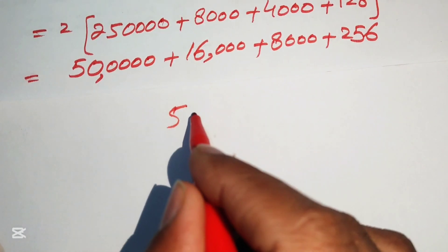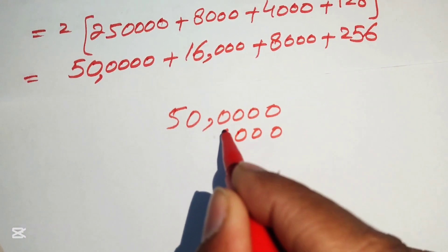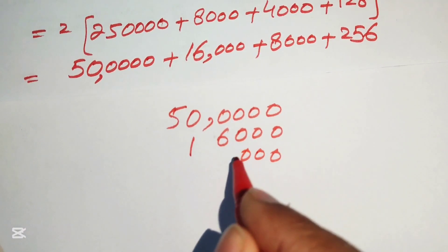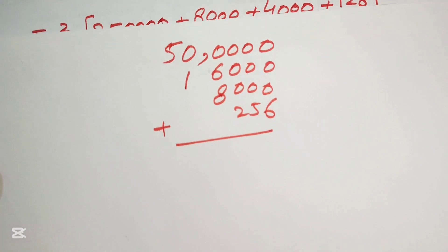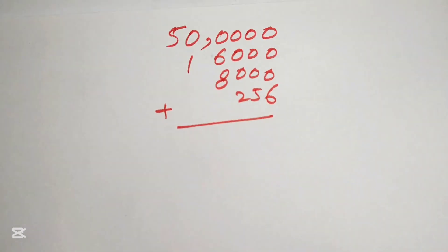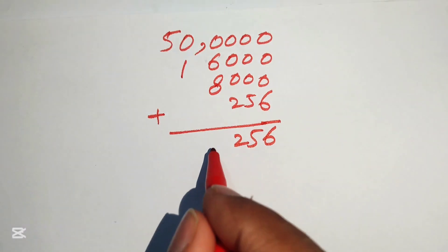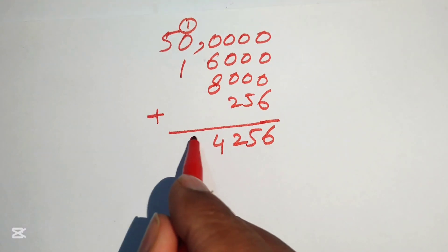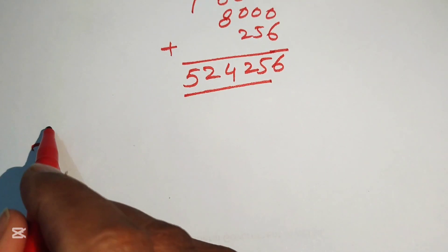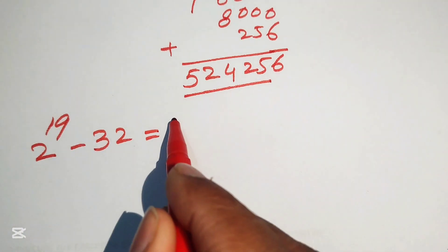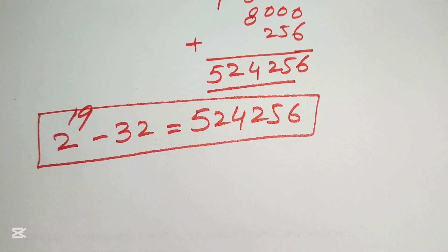We add all of these numbers by the traditional method of addition: adding the digits gives us 6, then 8 plus 6 is 14 so we write 4 and carry 1, and 1 plus 1 is 2, giving us 5. So finally the simplified form of 2 to the power of 19 minus 32 equals 262,256. This is our final answer. Thank you so much for watching this video — please subscribe to my channel for more exciting videos.